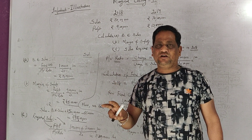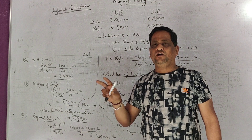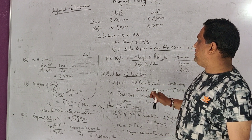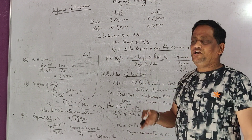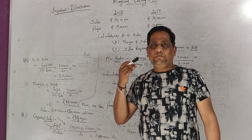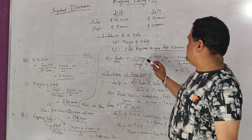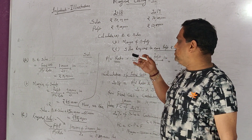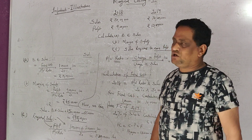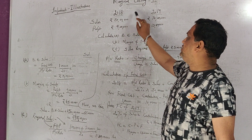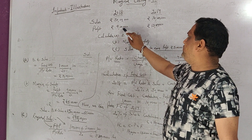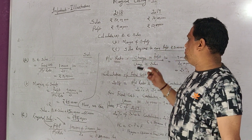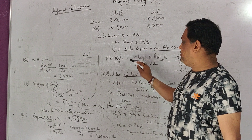If fixed cost is not given in the problem, we have to calculate it ourselves. The PV ratio formula I introduced earlier — change in profit divided by change in sale multiplied by 100 — applies when different years with different sales and profits are given and we need to calculate PV ratio.